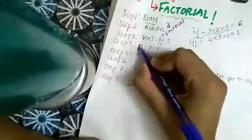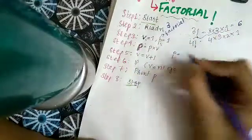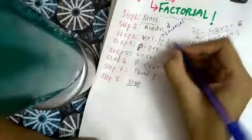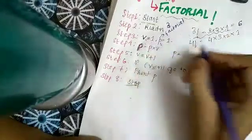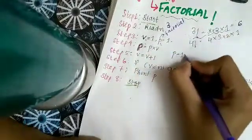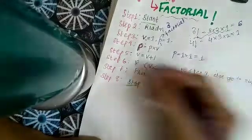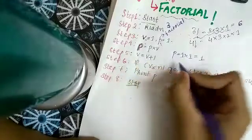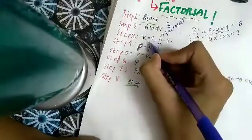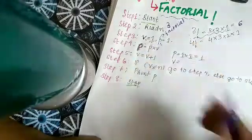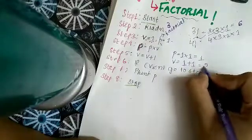What is the new p? New p is equal to p into v. p is 1 and v is also 1, so p is equal to 1 into 1, that is equal to 1. And what is the new v? The new v is equal to v plus 1. Initial v is 1, so 1 plus 1 is equal to 2.